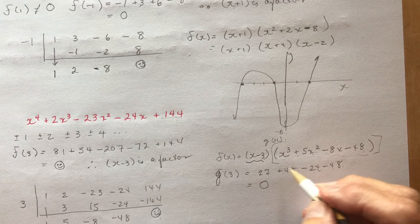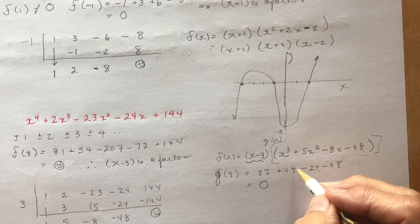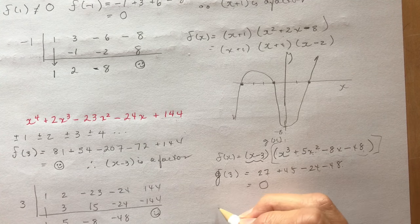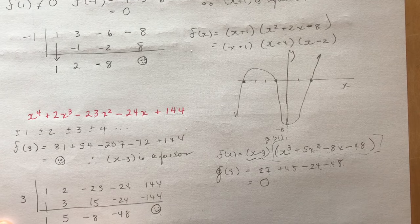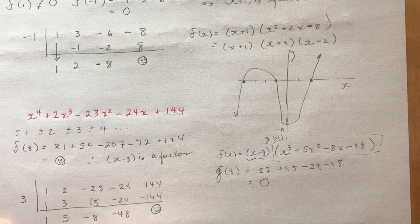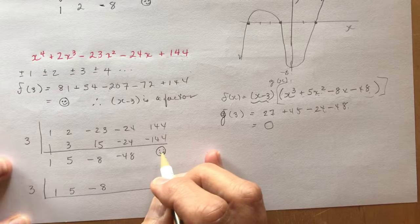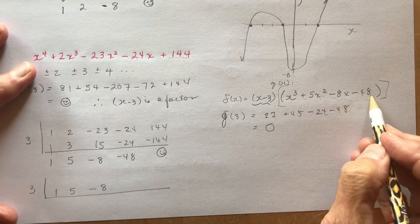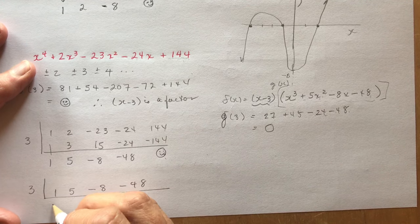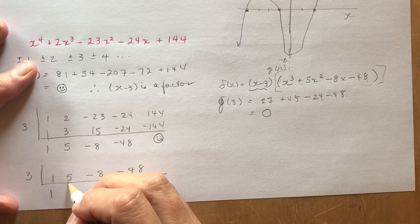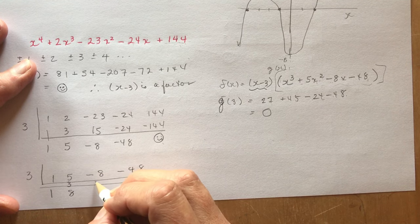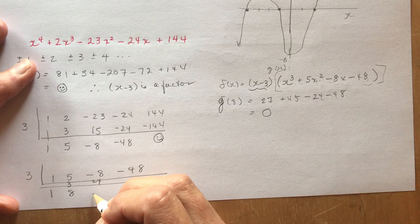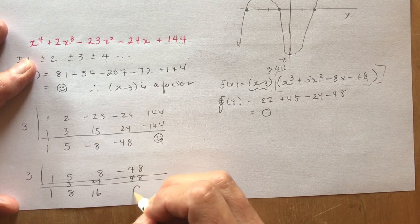So now I have to do synthetic division again, this time with coefficients 1, 5, minus 8, and minus 48. Bring down the 1; 3; add: 8; 24; add: 16; positive 48; 0. So I've reduced it further.